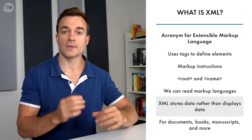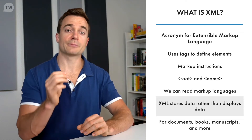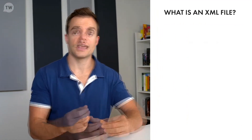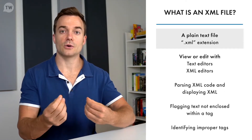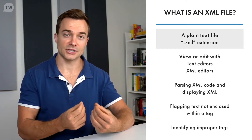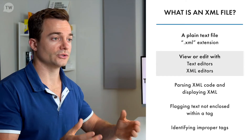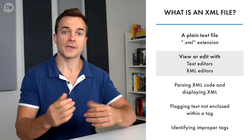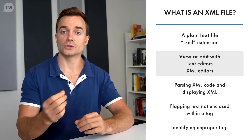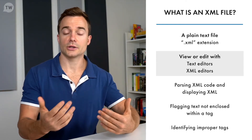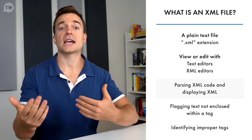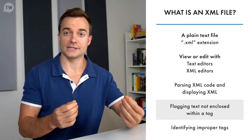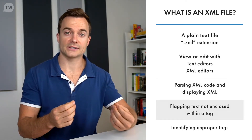You can use XML to represent structured information for documents, books, data, manuscripts, and more. An XML file is a plain text file with a .xml extension. To view and edit XML files you can use a standard text editor or specialized XML editors. An XML editor can include tools for validating XML code, including parsing XML code, displaying XML, flagging text not enclosed within a tag — known as orphan text — and identifying improper tags.